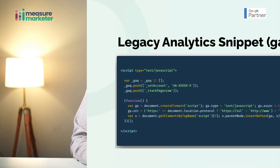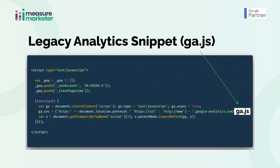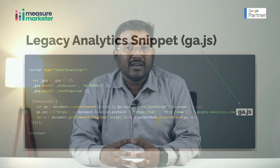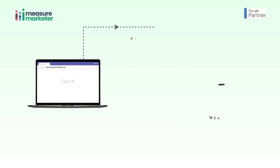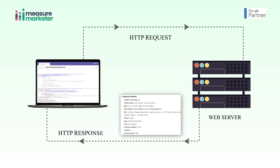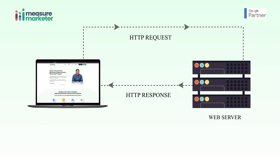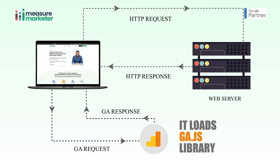For the last 10 to 12 years, people who used analytics were using a tracking code that loaded the ga.js library. When people visit your website, your website makes a request to your server, which deploys the analytics tracking code, and that tracking code makes a request to Google Analytics servers — loading the ga.js library. That is Classic Google Analytics.